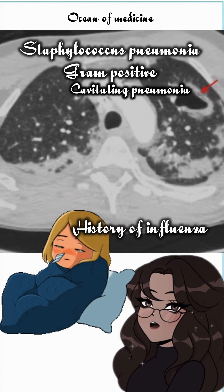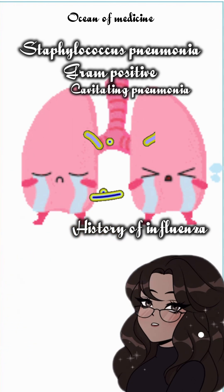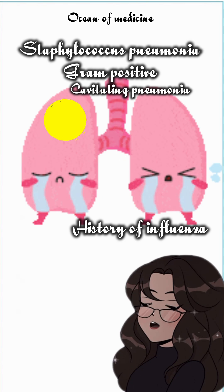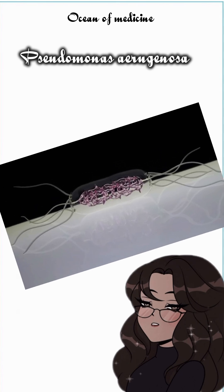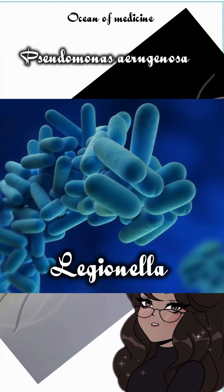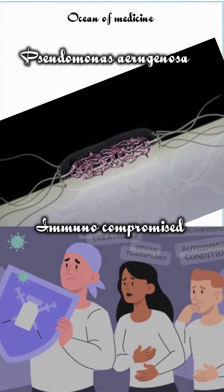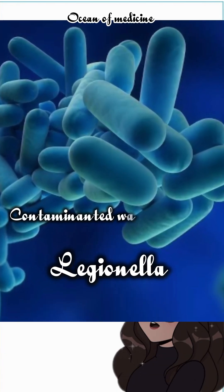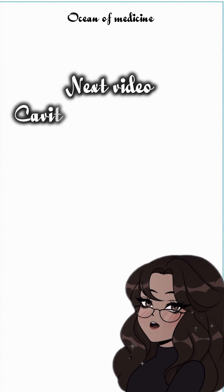Its toxins rapidly destroy lung tissue, resulting in cavities and sometimes abscess. Other notable bacteria include Pseudomonas aeruginosa and Legionella species. Pseudomonas is common in immunocompromised individuals, while Legionella often affects those exposed to contaminated water sources.